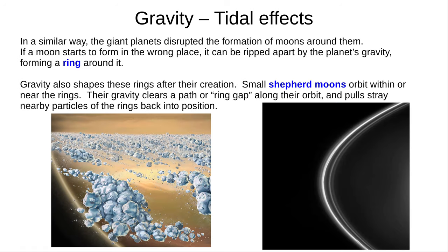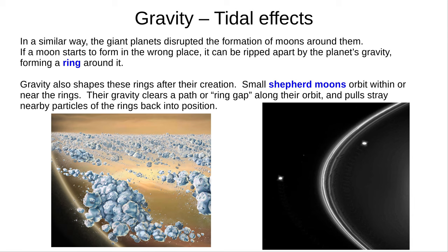In a similar way, the giant planets disrupted the formation of moons around them. If a moon starts to form in the wrong place, it can be ripped apart by the planet's gravity, the particles scattered into a ring around the planet. And gravity continues to shape these rings. Small shepherd moons orbit within or near the rings — their gravity clears a ring gap along their orbit, and pulls nearby stray particles back into position.